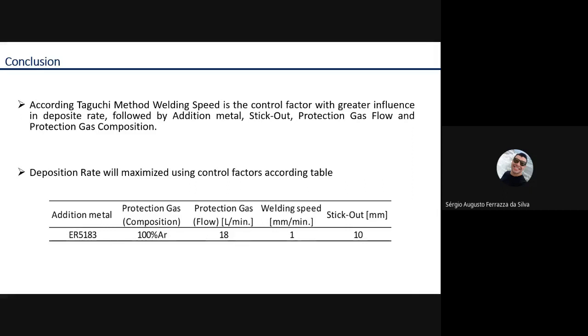Deposition rate will maximize using control factors according to the table: additional metal ER5183, protection gas composition 100% argon, protection gas flow 18 liters per minute, welding speed 1 meter per minute, and stick-out 10 millimeters. This is the best condition to maximize the deposition rate.